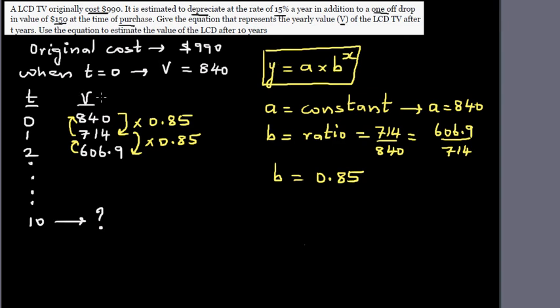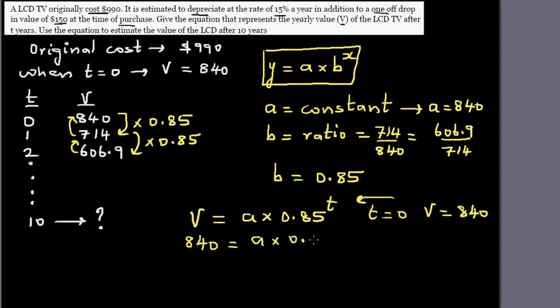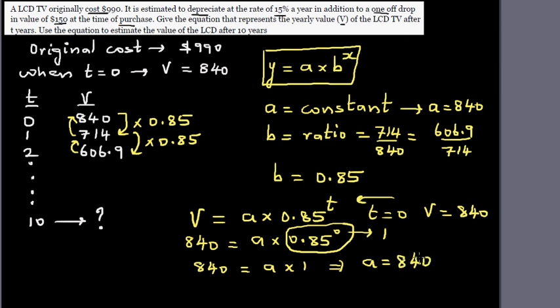So writing in context, this problem. So value is a times b is 0.85. So 0.85 raised to t. So now we know when t is 0, your value is 840. So we can substitute this into this equation. So we can say 840 is equal to a times 0.85 raised to 0. And anything raised to 0 is 1. So this is 840 is equal to a times 1. So a is 840. Or you can understand this like this. Because a is the initial value.